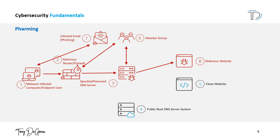When a user attempts to access a legitimate website, the user's computer or router will use the altered DNS settings to direct the traffic to a different IP address, potentially exposing the user to malware or phishing attacks. Pharming attacks can cause serious disruptions and loss of service. Security measures include using antivirus software and firewalls, keeping software and operating systems up to date, being cautious when clicking on links or visiting unfamiliar websites, and monitoring for suspicious activity. It's also important to use DNS service providers that offer secure services such as DNSSEC, which provides origin authentication of DNS data, data integrity, and authenticated denial of existence.